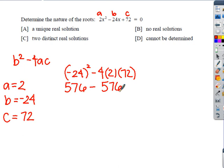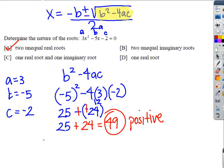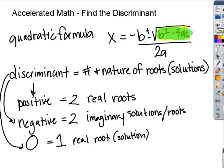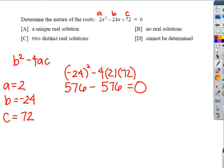So what does that tell us about our discriminant? Going back to our first page of notes: a discriminant of 0 tells us we have one real root. So the answer is one real solution. This isn't too bad.